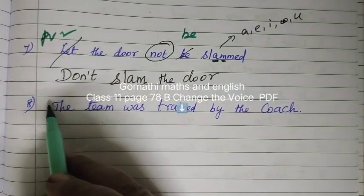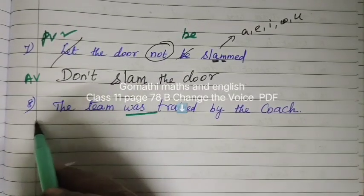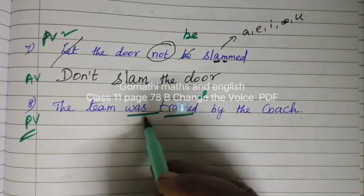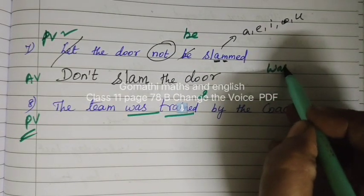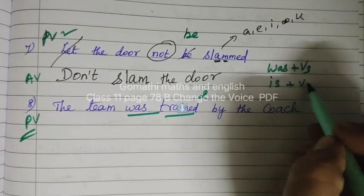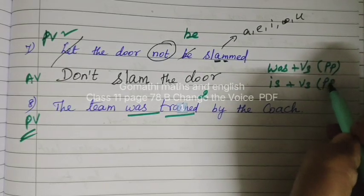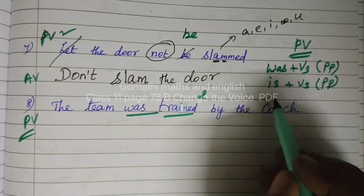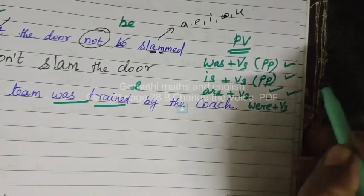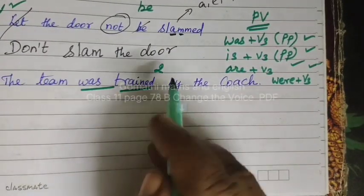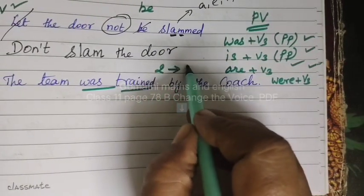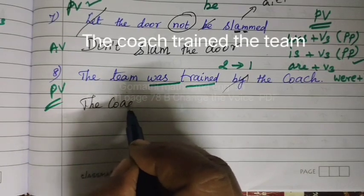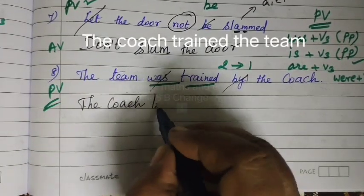This is passive voice. This is a double verb structure. The passive pattern is: 'was + V3' or 'is + V3' — where V3 is the past participle (pp). This is the structure of passive voice. 'Were + V3' and 'are + V3' are also passive structures. So this covers passive and active voice conversion, using 'by' with the cut/object part.